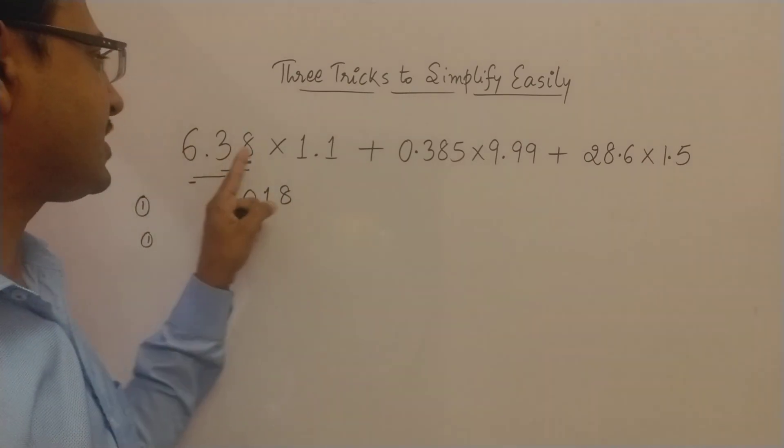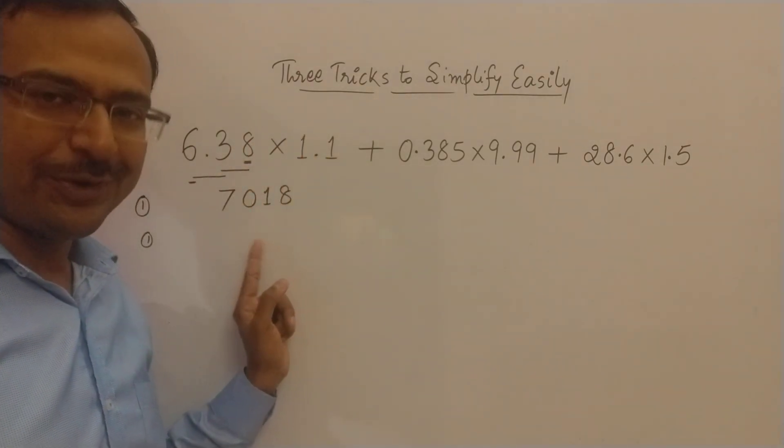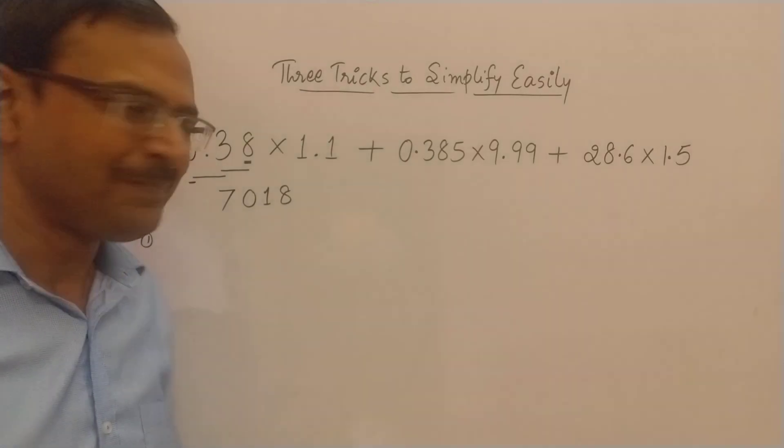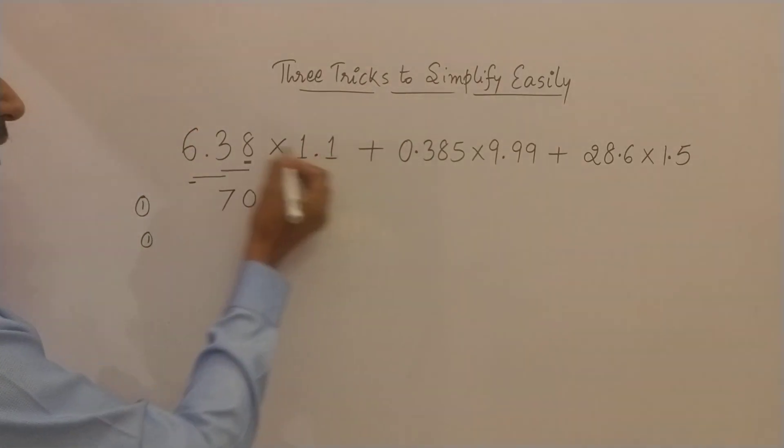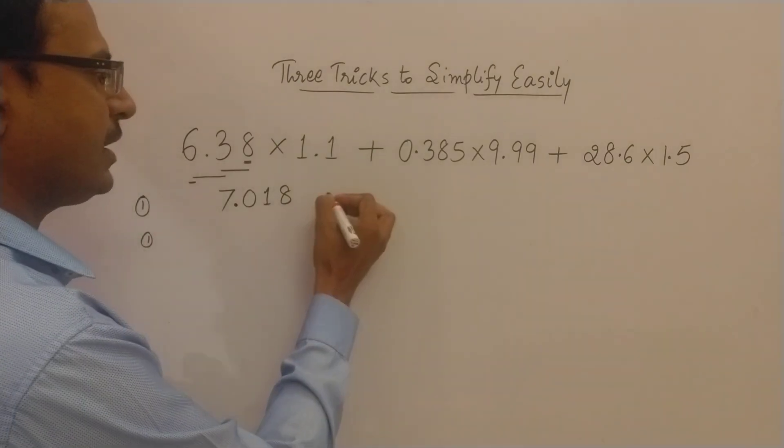So the product of 638 and 11 is 7,018. Amazing, right? How many decimal places? 1, 2, 3. So 7.018 is the answer for the first part.